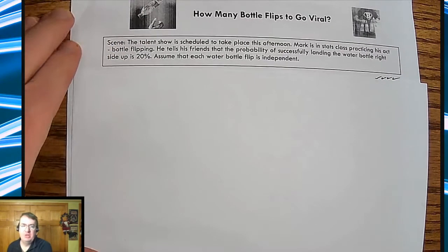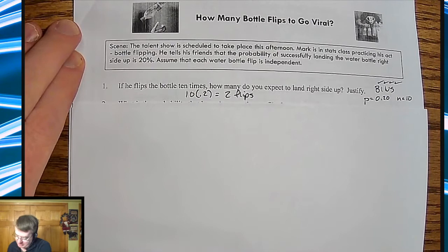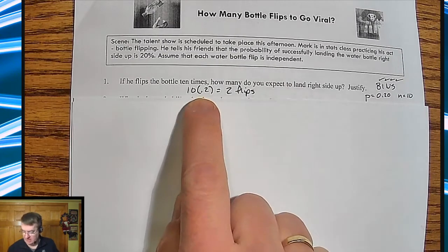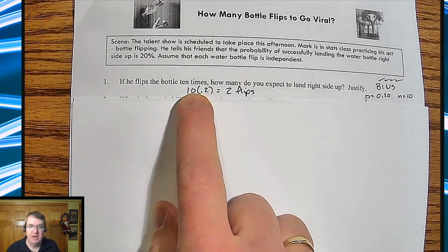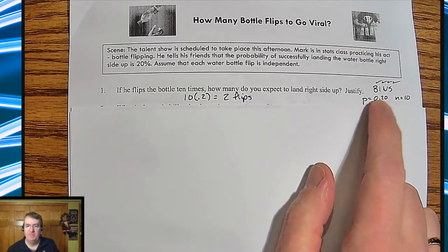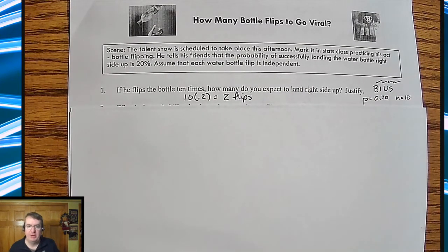So we're going to run through the binomial distribution first. So we're going to say, okay, if he flips it 10 times, how many times is he going to end up landing? Well, 10 times, N times P is two flips. Good. By the way, check that it was binomial. Away we go.